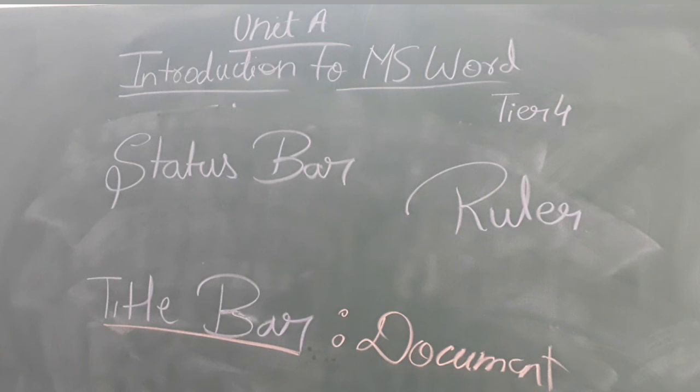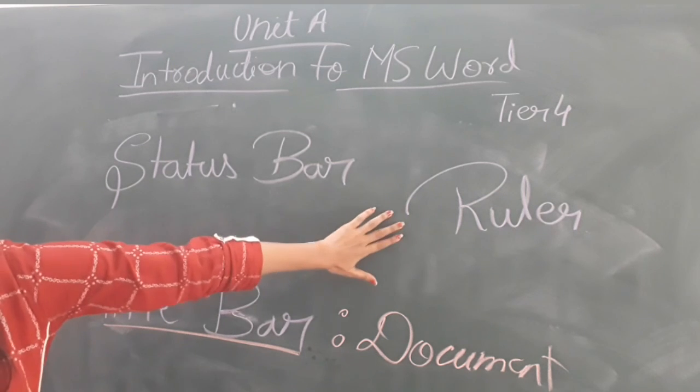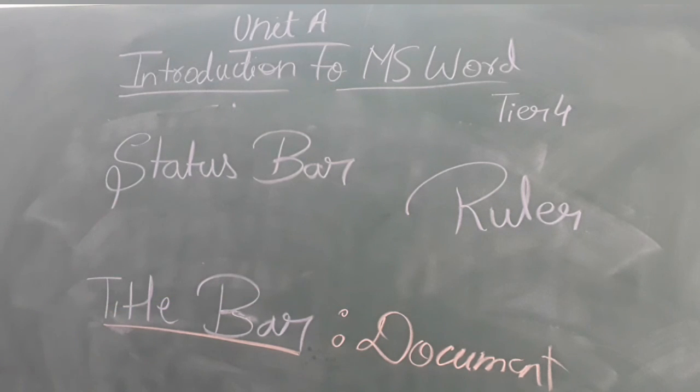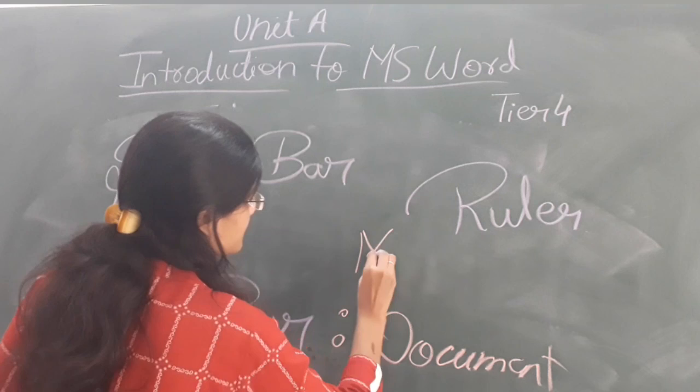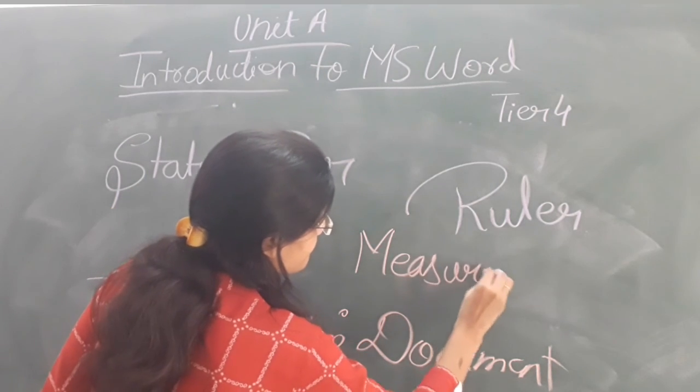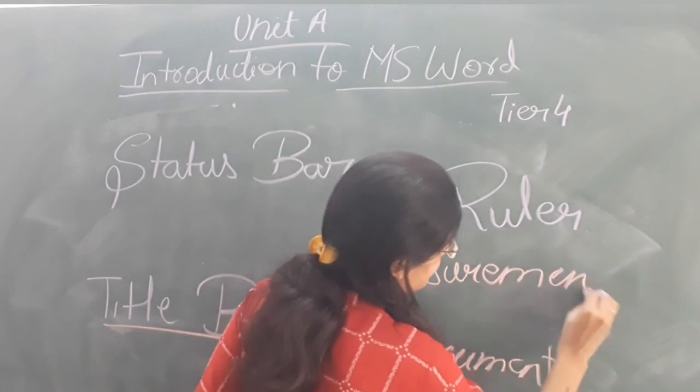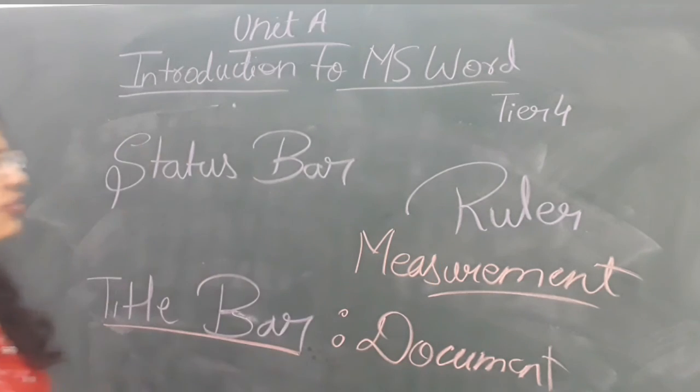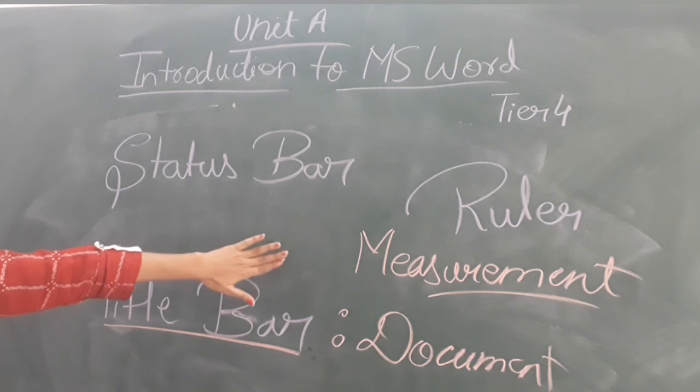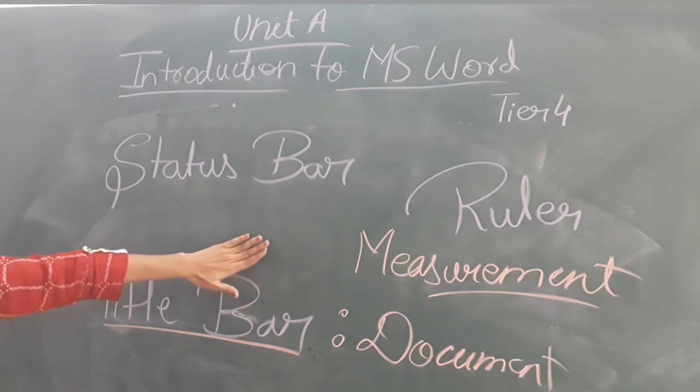Now the next is Ruler. It shows the measurement, tab settings, height and width of the page. The next one is Ruler. Ruler will show the measurement of the page. So that it will decide the height, weight and measurement of the page on which you are working.